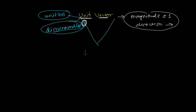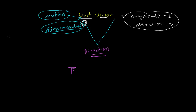Unit vectors always represent just a direction. A vector is the combination of two things: magnitude and direction. So vector p can be written as the magnitude multiplied by the direction, and the direction is given by the unit vector, written as p-cap.